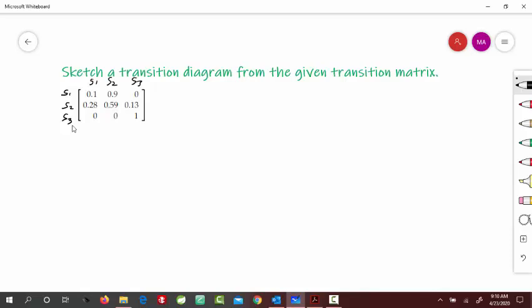Now to sketch a diagram, what we do is circle it, call it S1, and then S2, and this is S3.